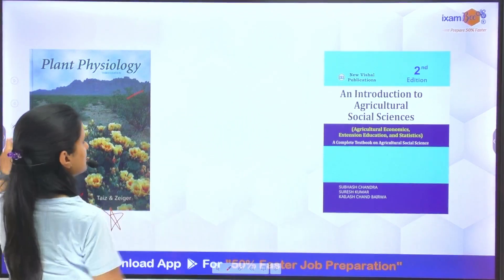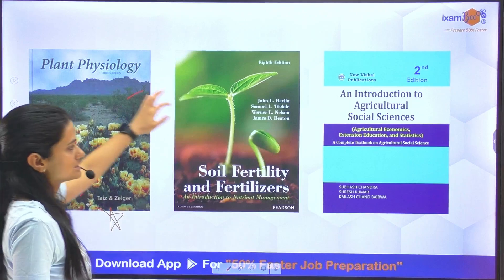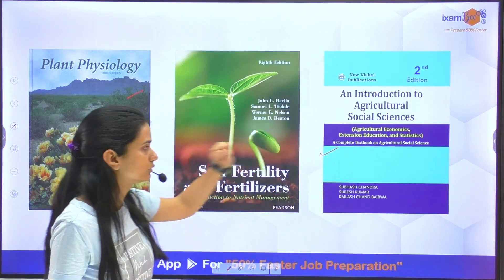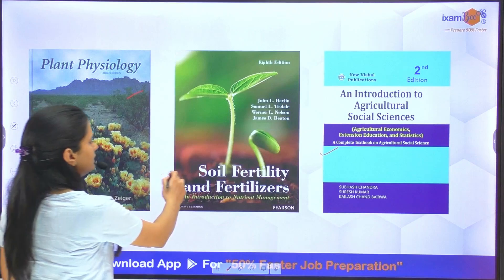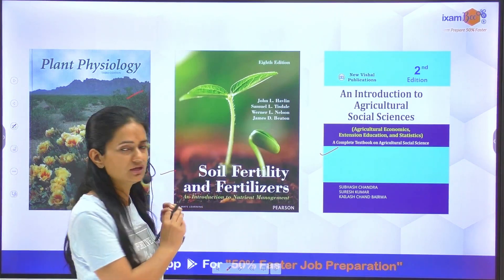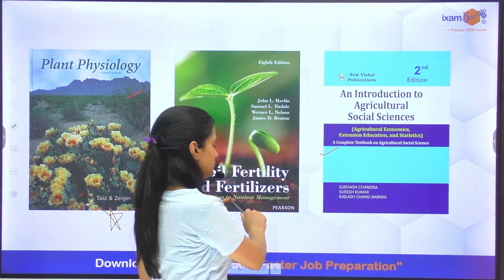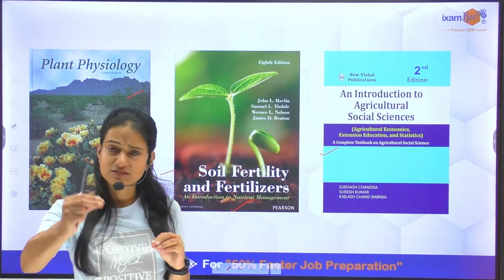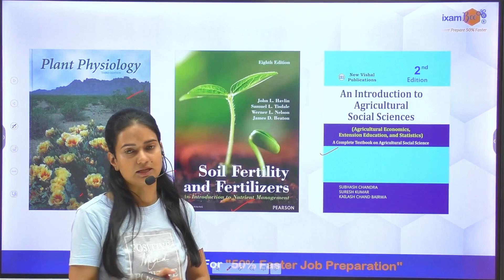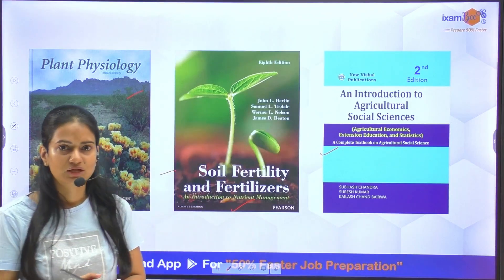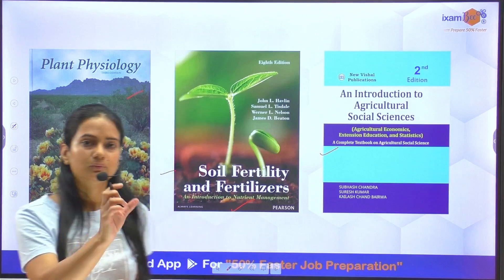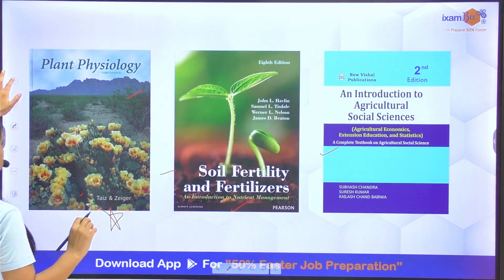In addition to this, for agriculture and social sciences, this book covers economics and extension. For soil science, 'Soil Fertility and Fertilizers' is one of the best books you can refer to. If you need conceptual clarity, you can refer to this book. But I would say do not go into too much depth, because if you look at the question paper, there are more factual questions.